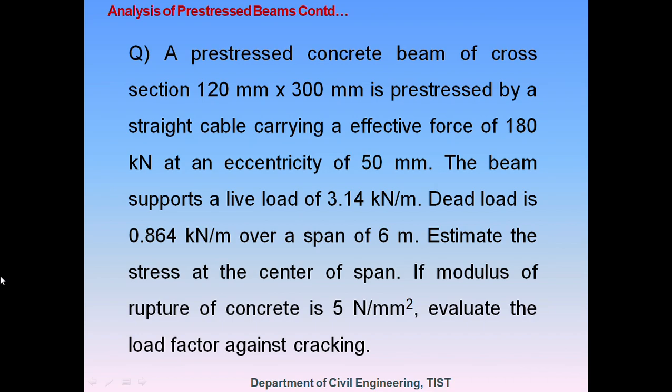The first problem: a pre-stressed concrete beam of cross-section 120 mm by 300 mm is pre-stressed by a straight cable carrying effective force of 180 kN at an eccentricity of 50 mm. The beam supports a live load of 3.14 kN per m and dead load of 0.864 kN per m over a span of 6 m. Estimate the stress at the center of the span. If the modulus of rupture of concrete is 5 N per mm square, evaluate the load factor against cracking.